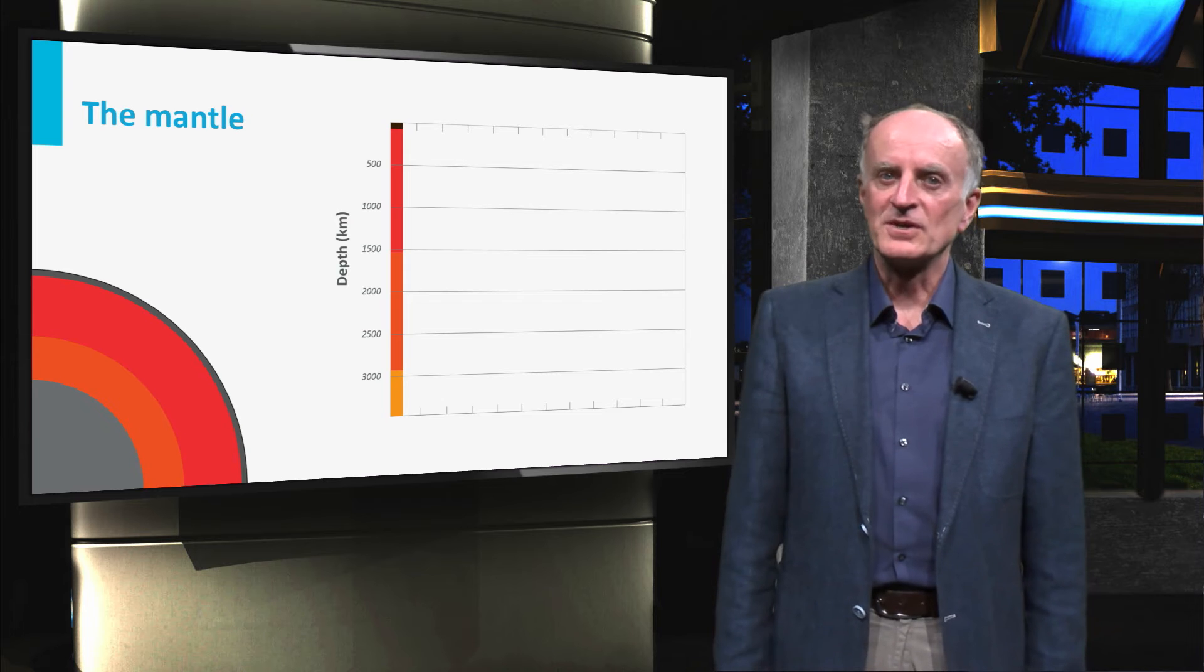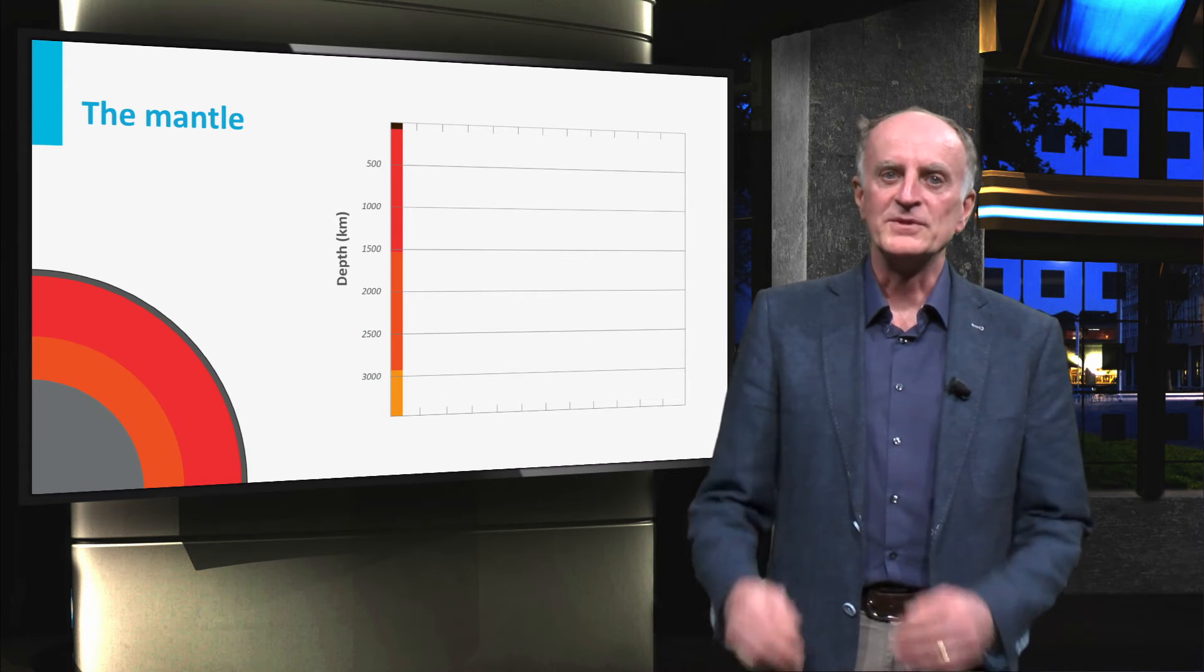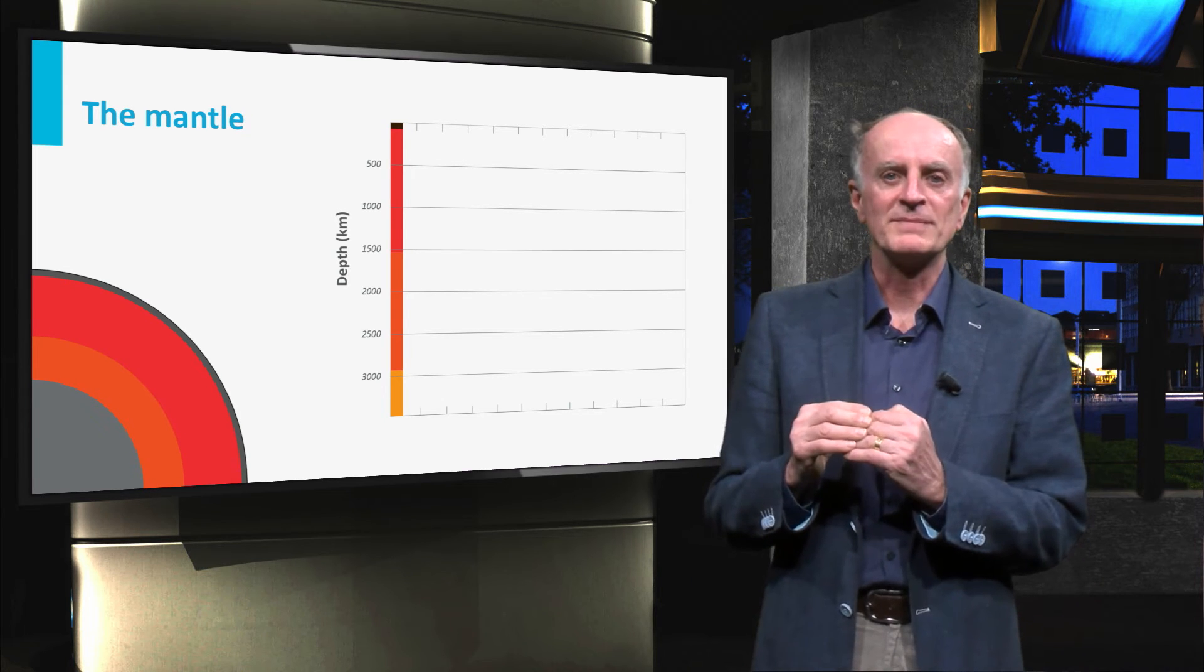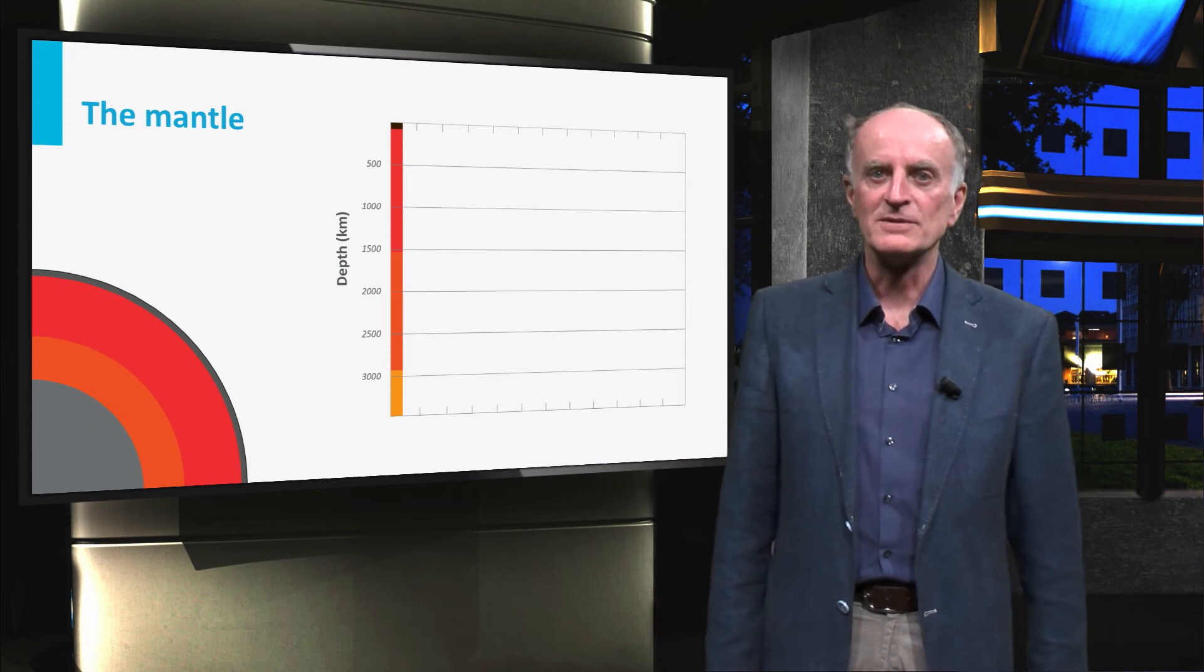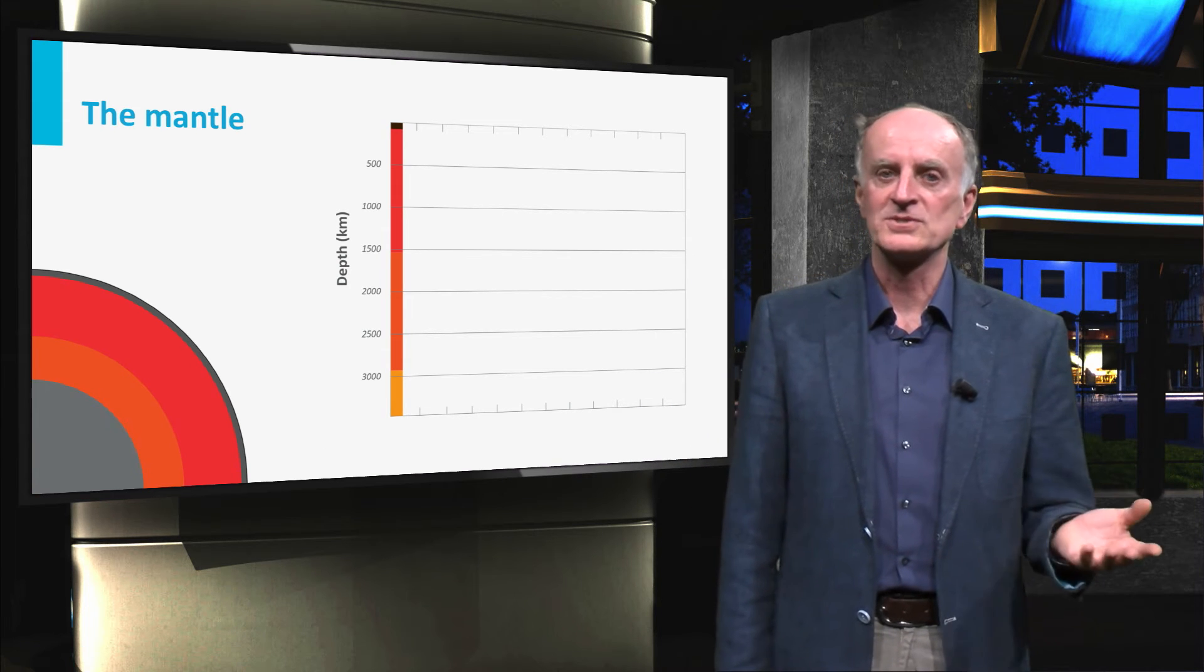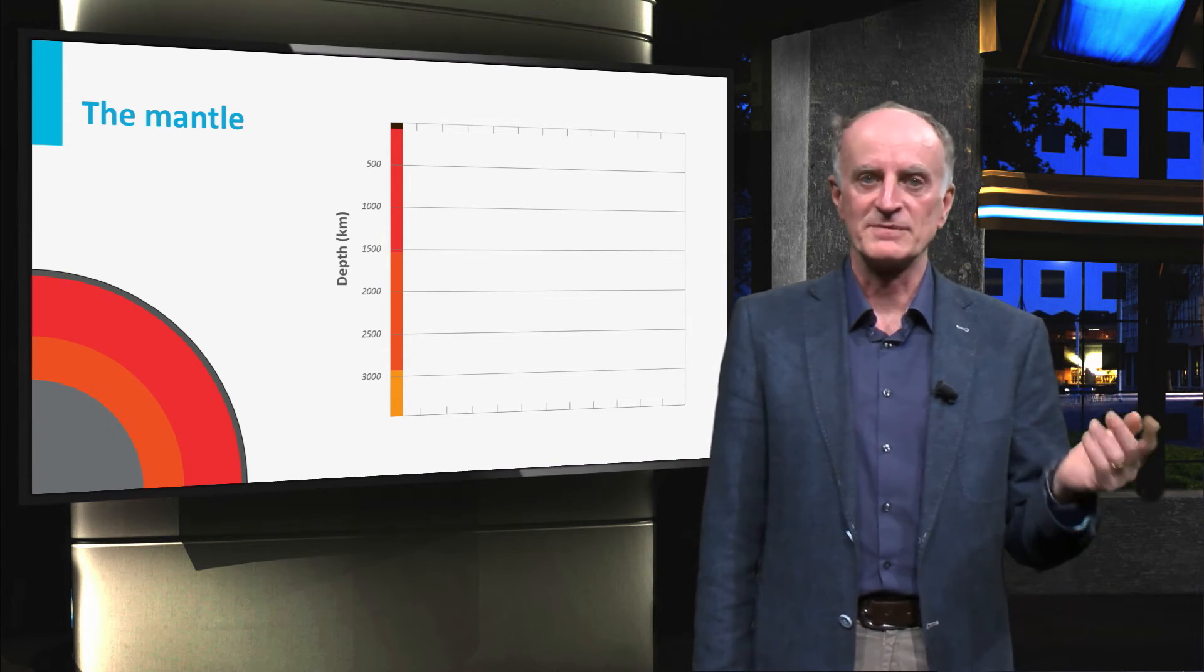With the exception of its uppermost part, the domain above the core-mantle boundary is called mantle. Nearly 3000 km of rocks of fairly constant composition, substantially different from that of the core.